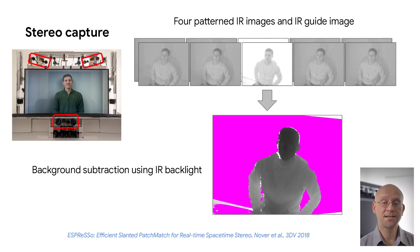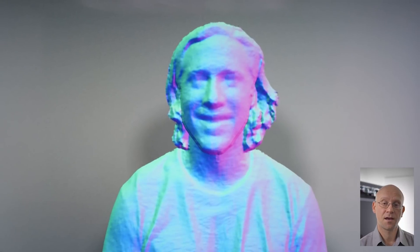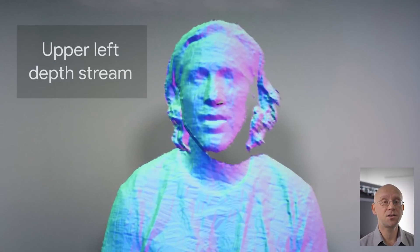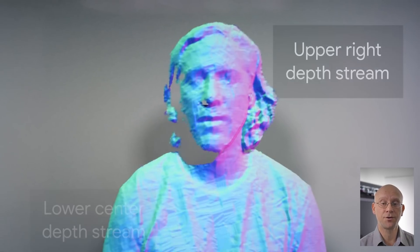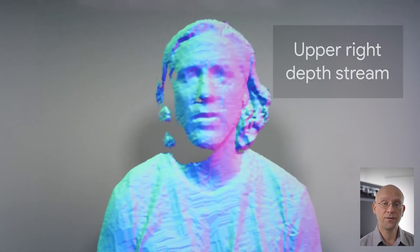This algorithm takes as input infrared image pairs at 180 frames per second and computes synchronized output depth images at 60 frames per second. The infrared backlight is used to carve noisy background data from the stereo images and provides a reliable boundary for stereo estimation, improving accuracy at silhouette edges, as you can see in this result.